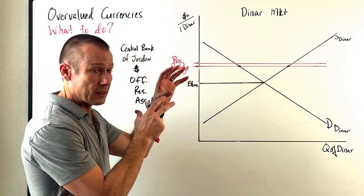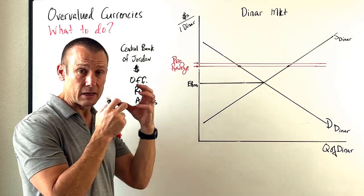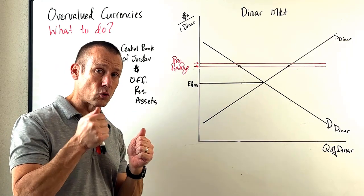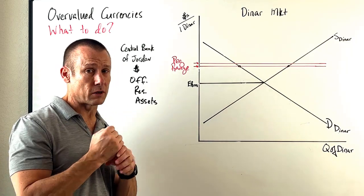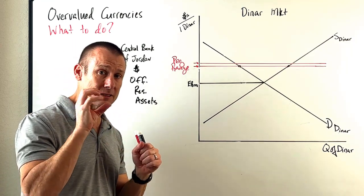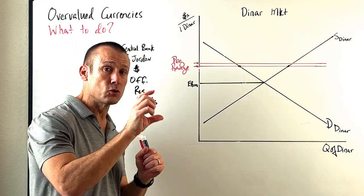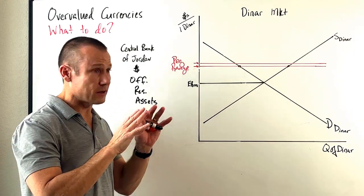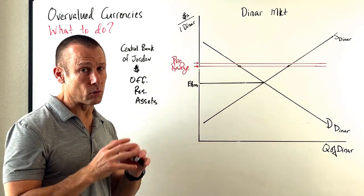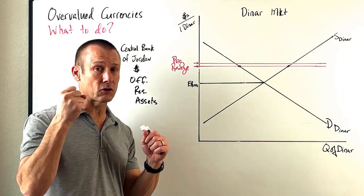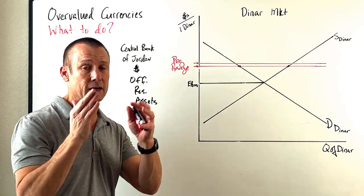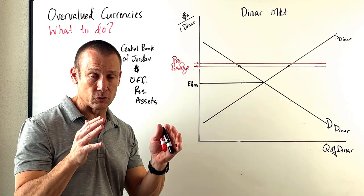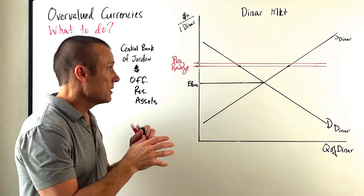So in this graph I'm trying to represent a currency that is overvalued. The example I'm using is the Jordanian dinar. Jordan pegs their currency, the dinar, to the U.S. dollar. I want to be very clear, this is not doing any current event at all — we're just picking a currency that is in fact pegged to the U.S. dollar to use as our example.